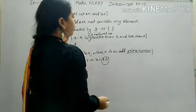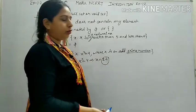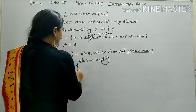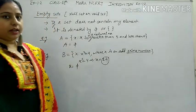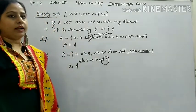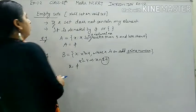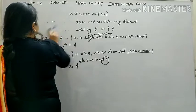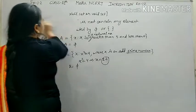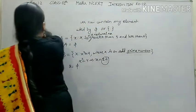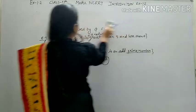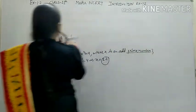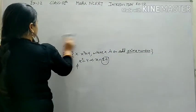We can also add the condition where x is an odd prime number greater than 2. In that case also, the value of this set will be phi (φ), because no such element satisfies the condition.